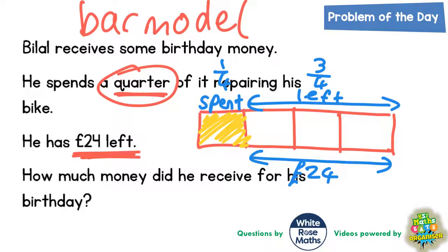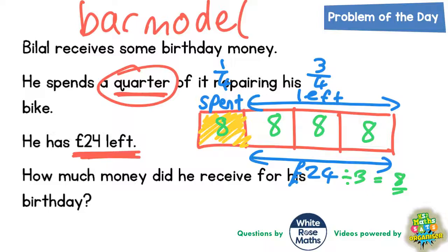If we split those three quarters into three equal pieces, 24 divided by 3 is 8, so each piece must be worth £8. Now, if each of the three remaining quarters is worth £8, the quarter he spent must also be worth £8, because all quarters must be the same size.